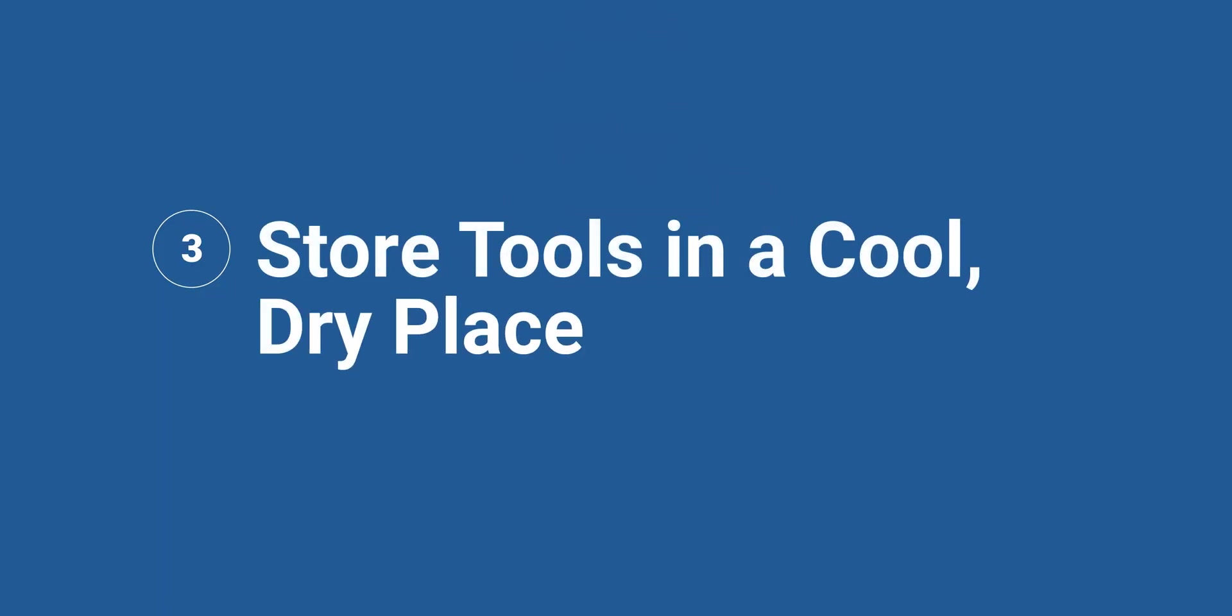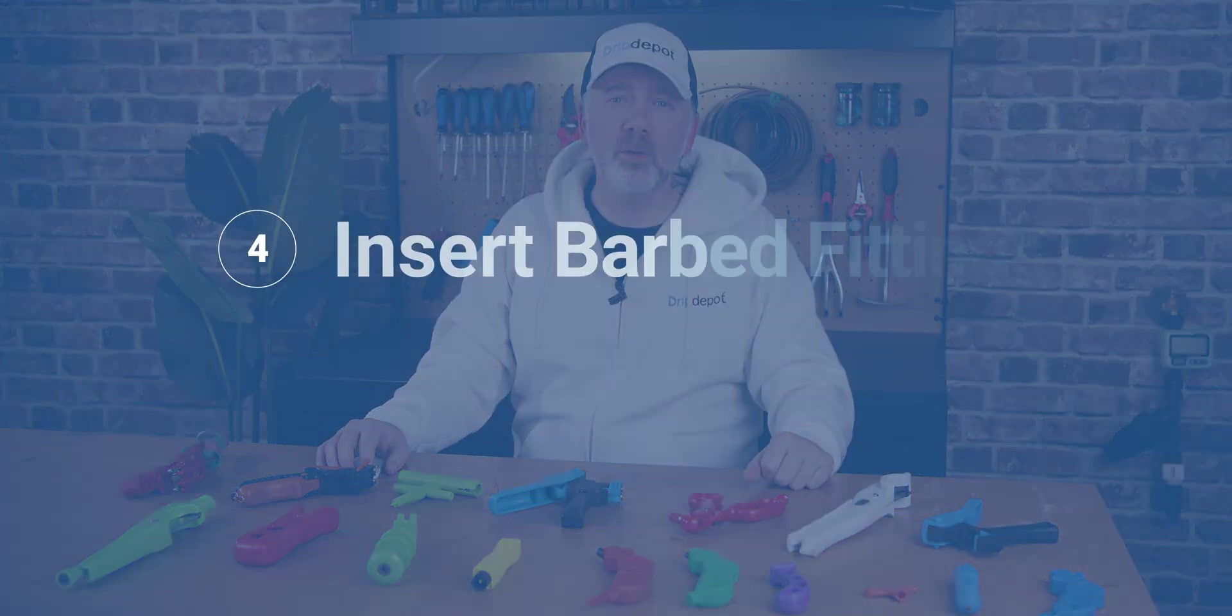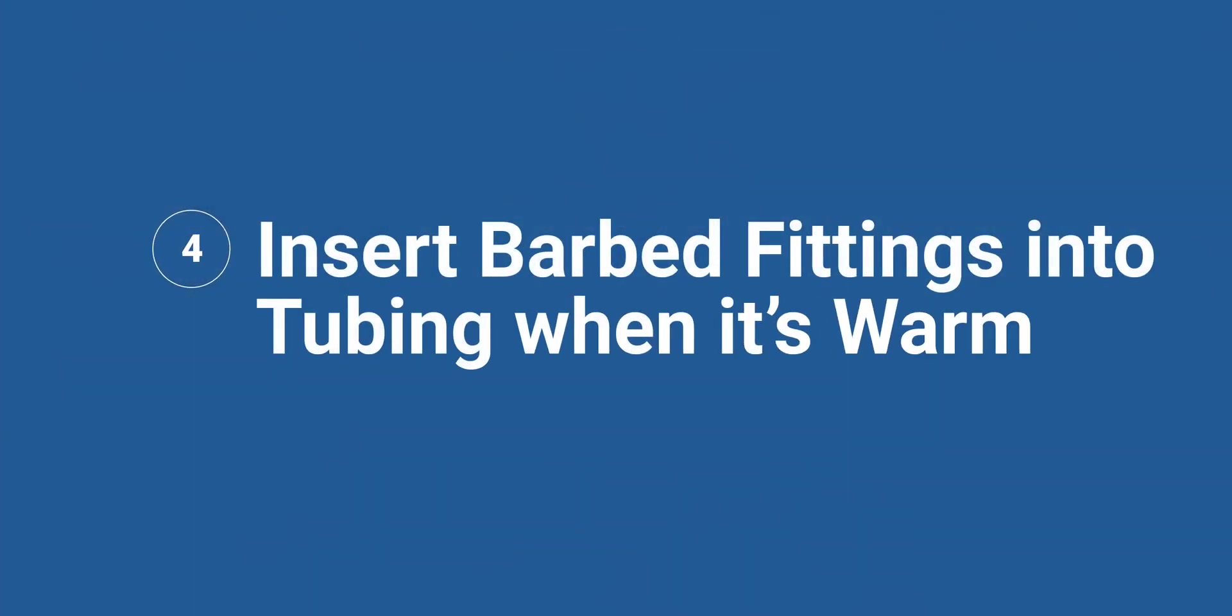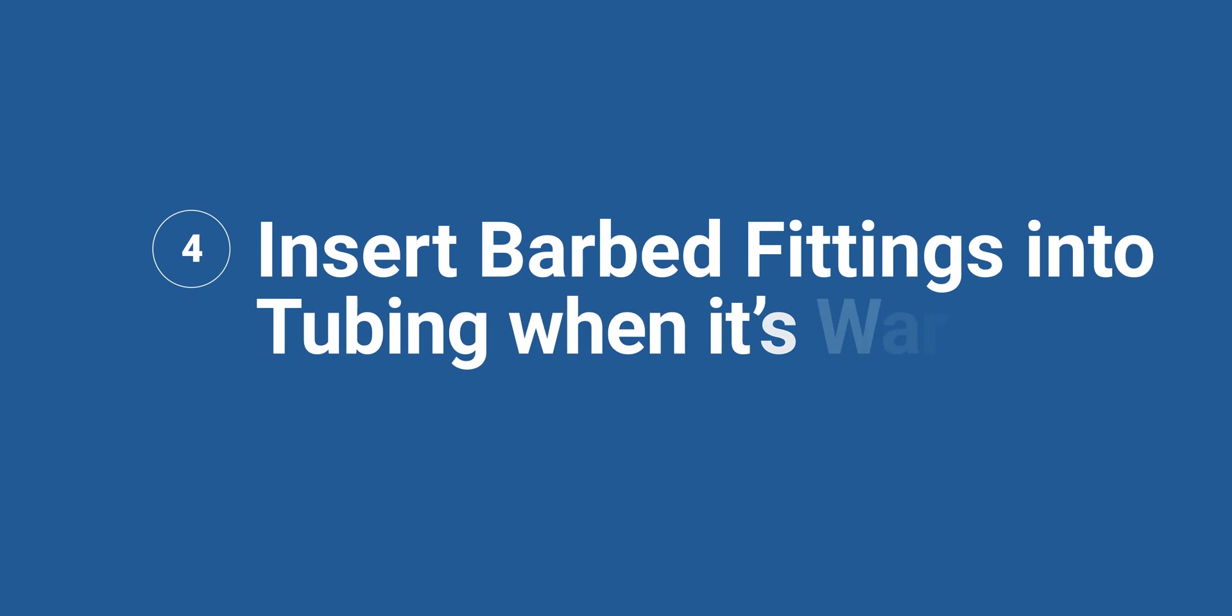Number three, store all the tools in a cool, dry place, particularly those with any metal parts or components. Also, try to keep them out of direct sunlight as often as possible when they're not in use. Number four, when you're inserting one-quarter inch barbed fittings into quarter inch tubing or half inch barbed or permalock fittings into half inch tubing, it's easier to do it when the tubing is warm, even if you're using one of the insertion tools. When the tubing is warm, it's significantly more flexible. That makes it easier to push things inside of it. Following these tips will help ensure you get the full lifespan out of your punches and tools.